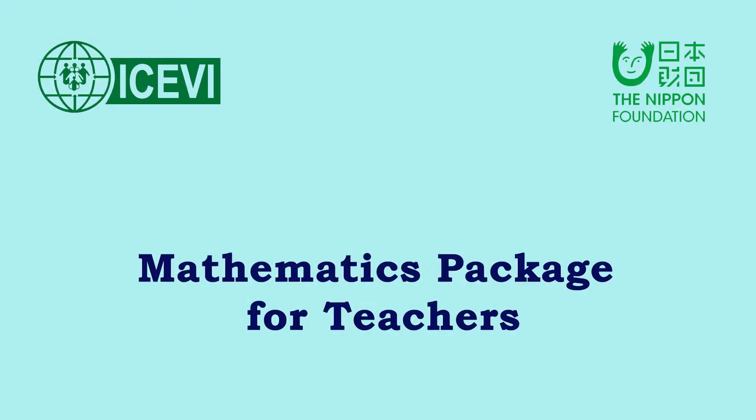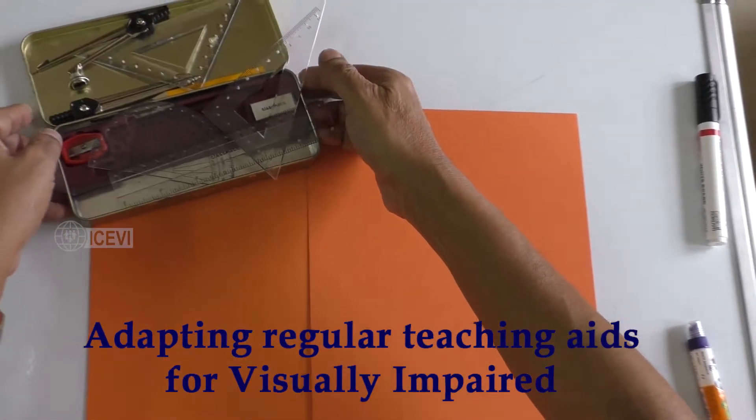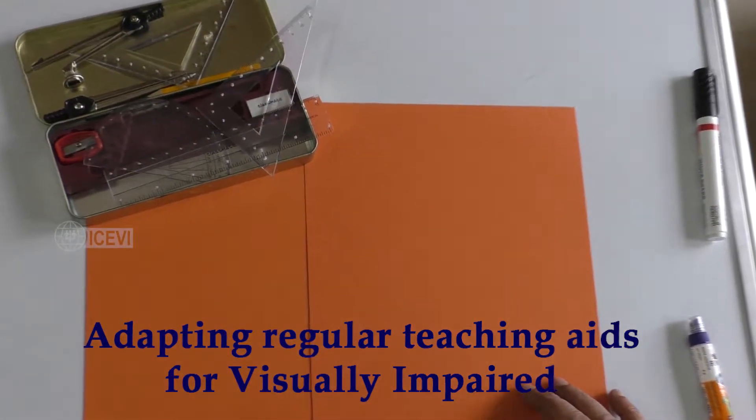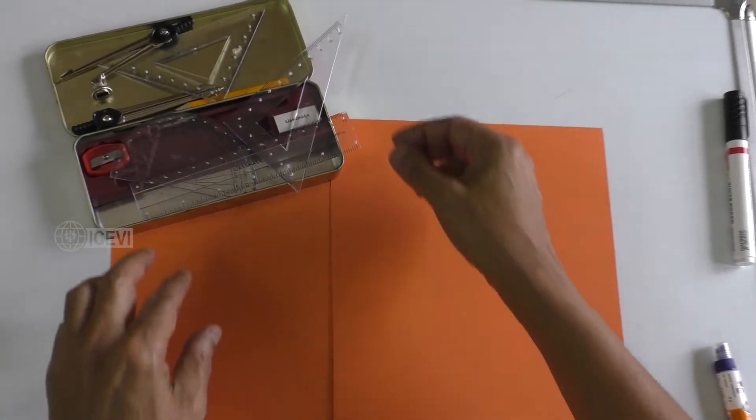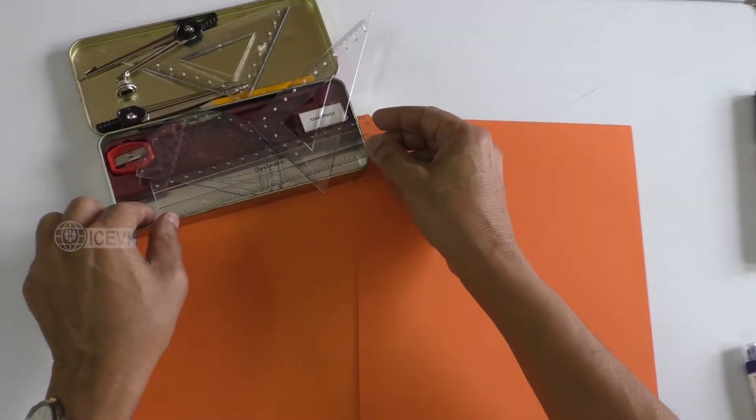The ICBI-Nippon Foundation mathematics package for teachers. Title of the video: Let us see how a regular teaching aid can be adapted for visually impaired children. This is a regular geometry box, so what we have done is taken the devices and adapted them for the benefit of visually impaired children.